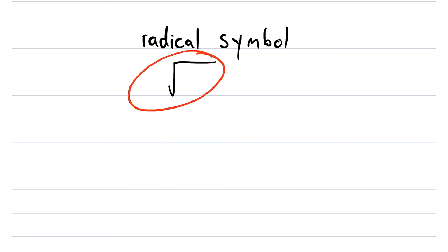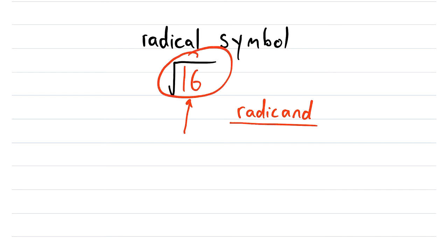We could put something in this radical, like, for example, the number 16. And in this case, 16 is what we call the radicand. So a radicand is just a quantity that is under a radical symbol.